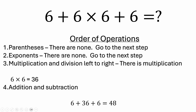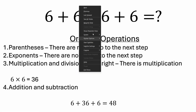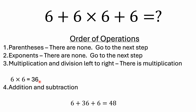You look for exponents — again, there are none — so you go to the next step. We don't have parentheses, we don't have exponents, so you look for multiplication and division. We do have multiplication, so that is solved next. I know a lot of people think you just blindly solve left to right, but you actually need to do this multiplication first. So you do six times six and get 36, then in step four you do the addition: six plus 36 plus six equals 48.